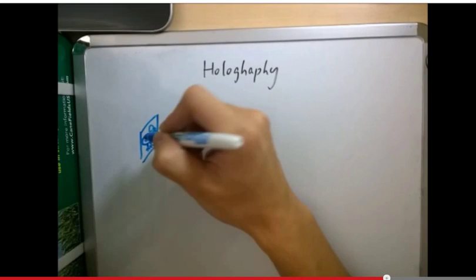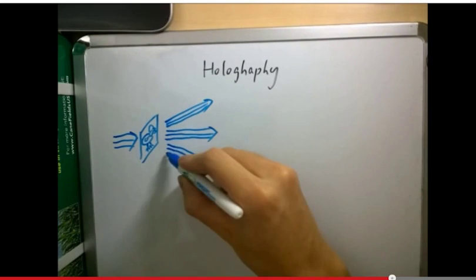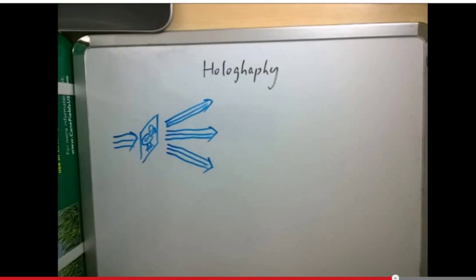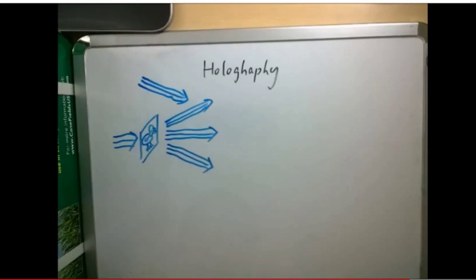A holography film can record phase information. In a holography system, the object is illuminated by a plane wave, and some plane waves with different directions are emitted. At the same time, we introduce another plane wave that is coherent to the original one. This wave will interfere with the waves emitted by the object.